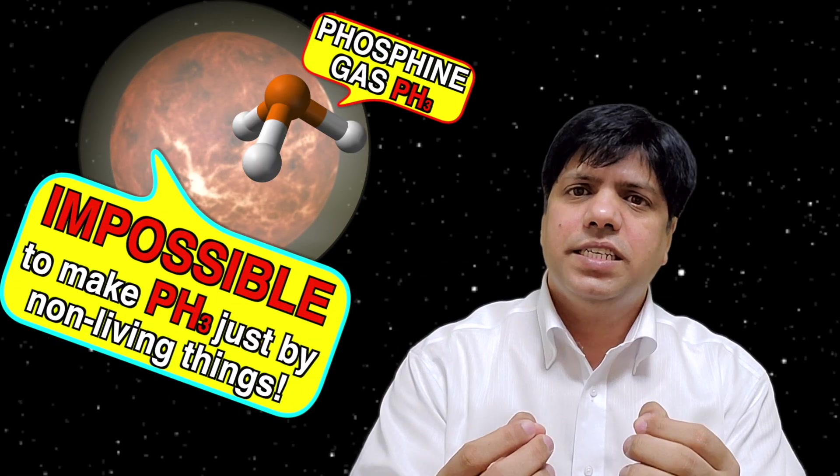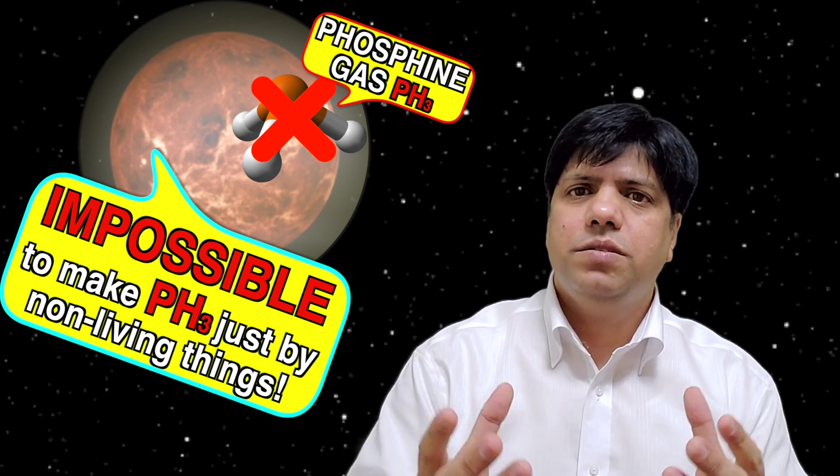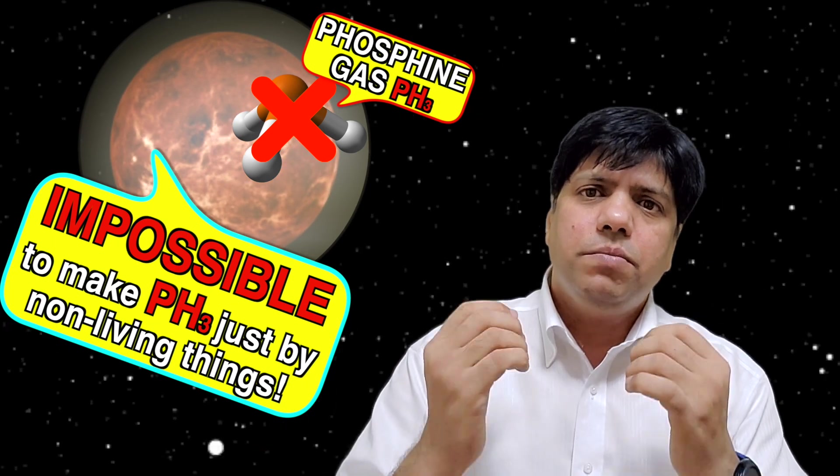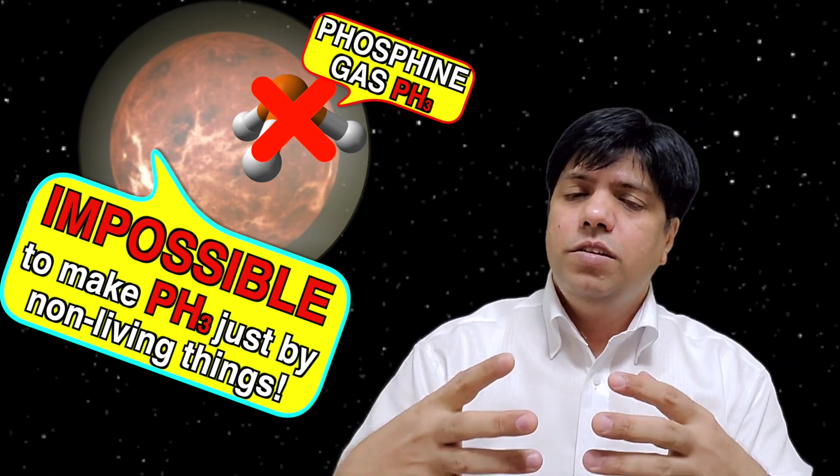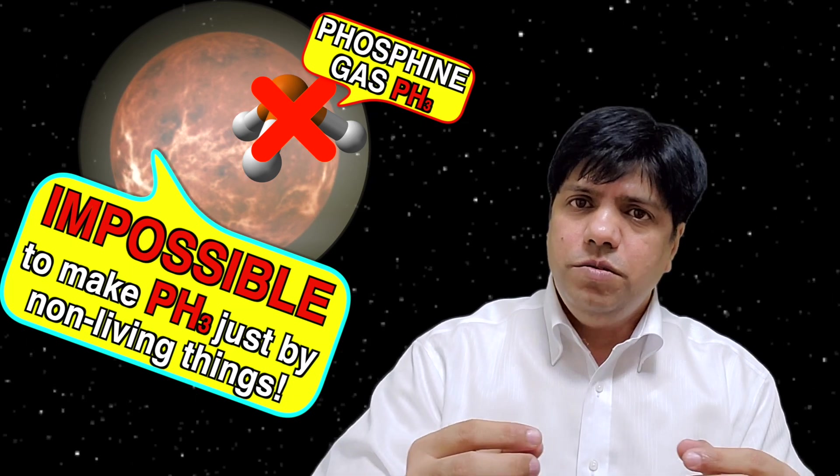Mercury and of course Venus, it's not possible to produce phosphine gas just by natural chemical reactions because it needs a lot of temperature and pressure to create conditions for phosphine gas to produce.